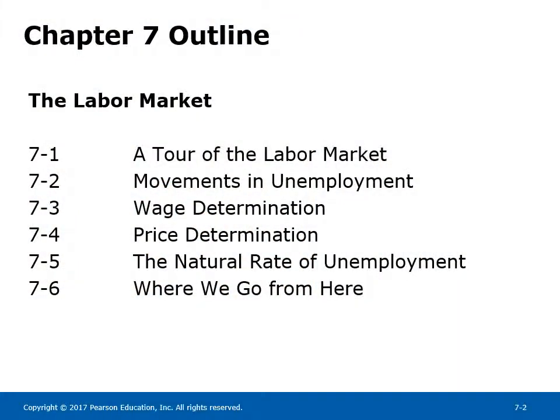Chapter 7 Outline: The Labor Market. Section 7-1: A Tour of the Labor Market. 7-2: Movements in Unemployment. 7-3: Wage Determination. 7-4: Price Determination. 7-5: The Natural Rate of Unemployment. 7-6: Where We Go From Here.